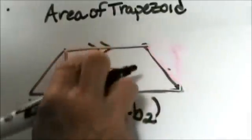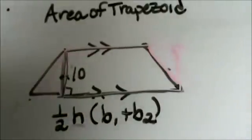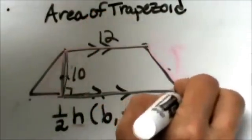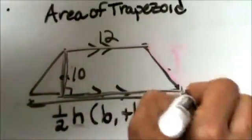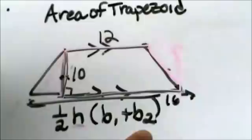Let's say that our height is 10 and our two bases are 12 and 16. This original base is 16. What we are going to do is plug in 12 and 16 for B1 and B2.